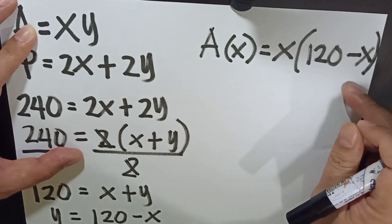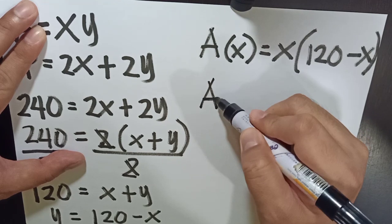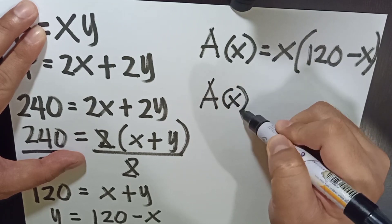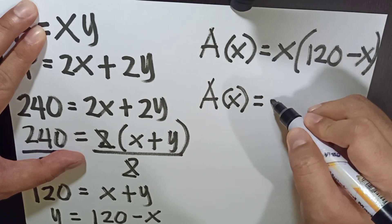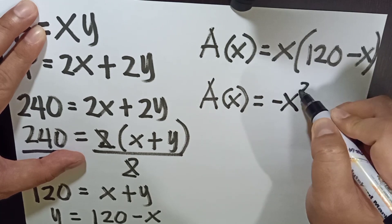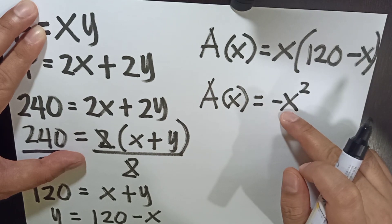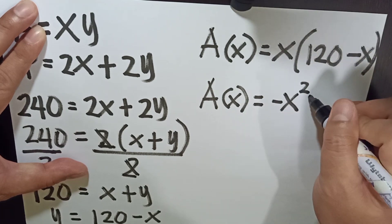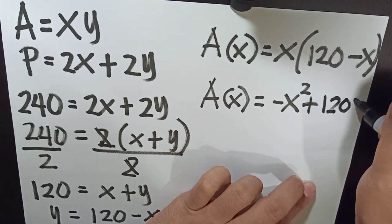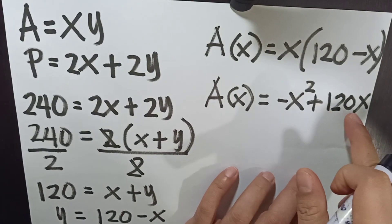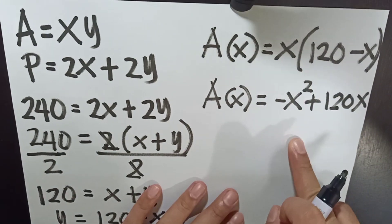Algebraically, if we are going to simplify this, area A as a function of x is equal now to negative x squared, since x times negative x is negative x squared, plus 120x, because we multiply x and 120.